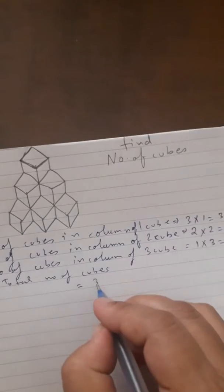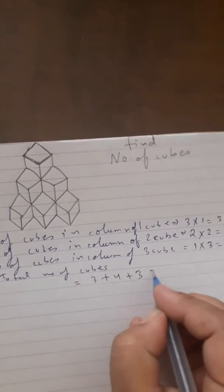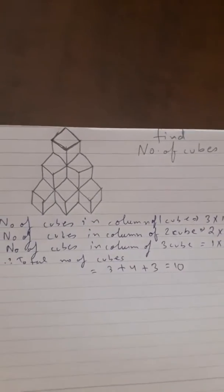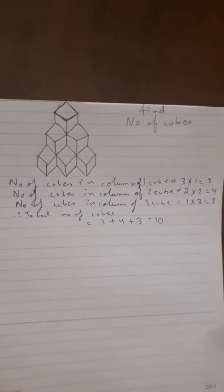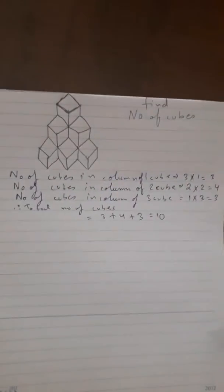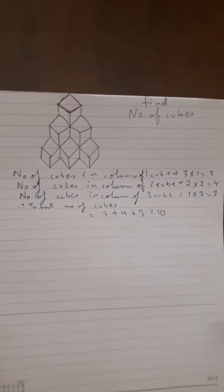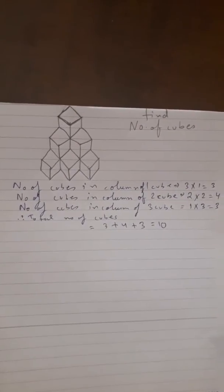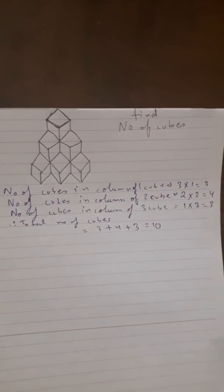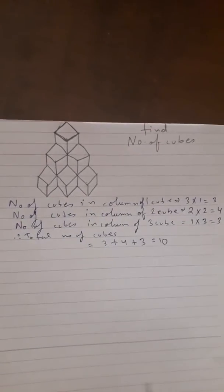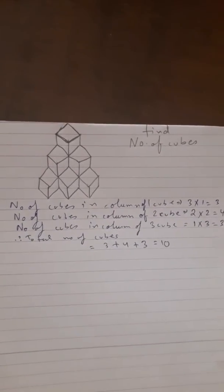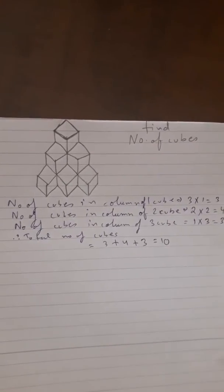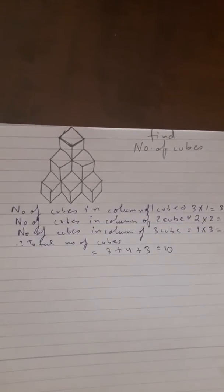For the total number of cubes, you have to add: three plus four plus three, which gives ten. In this way you can find the number of cubes for a given figure. You can also check my second and third series for more complex questions.